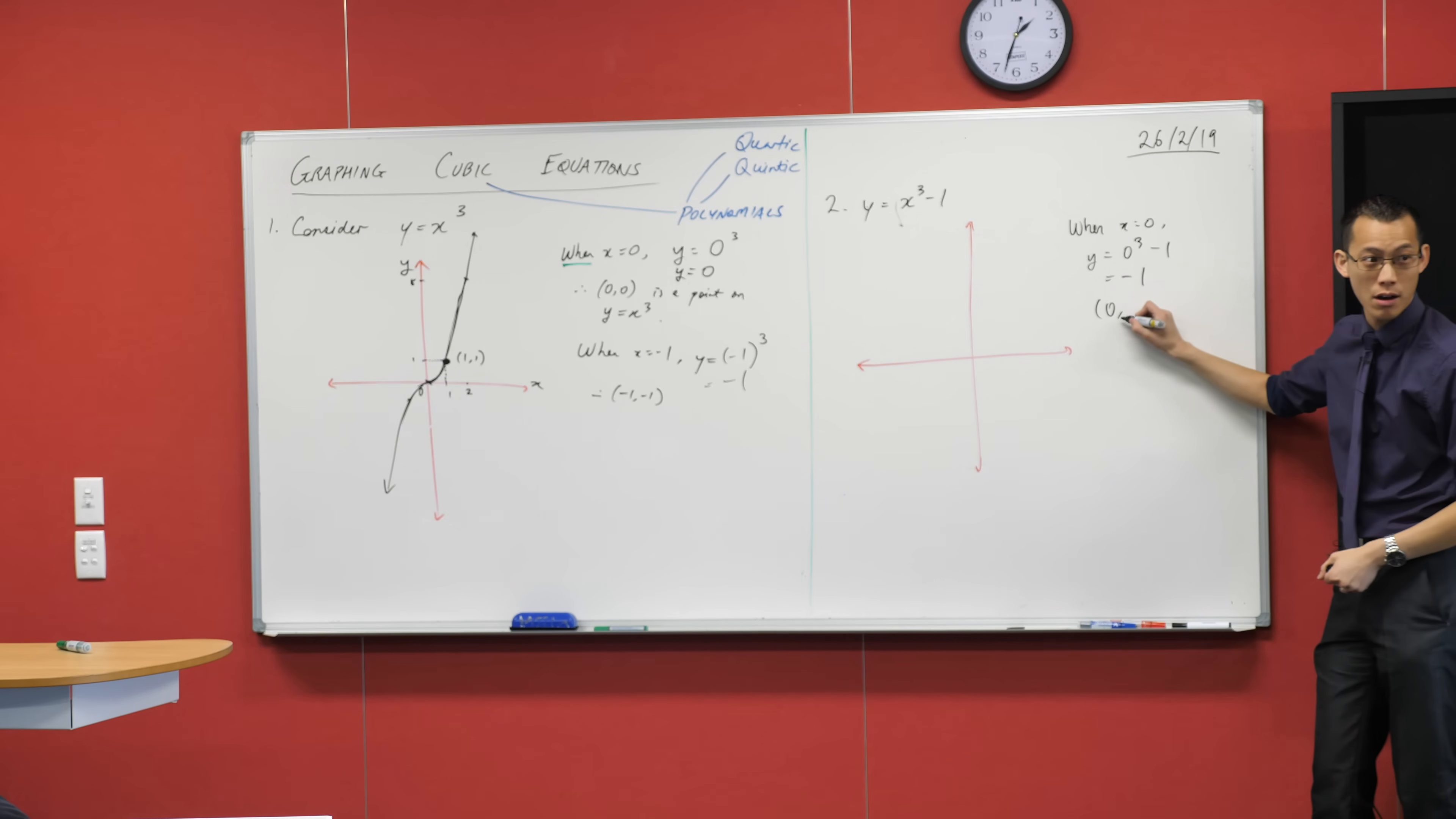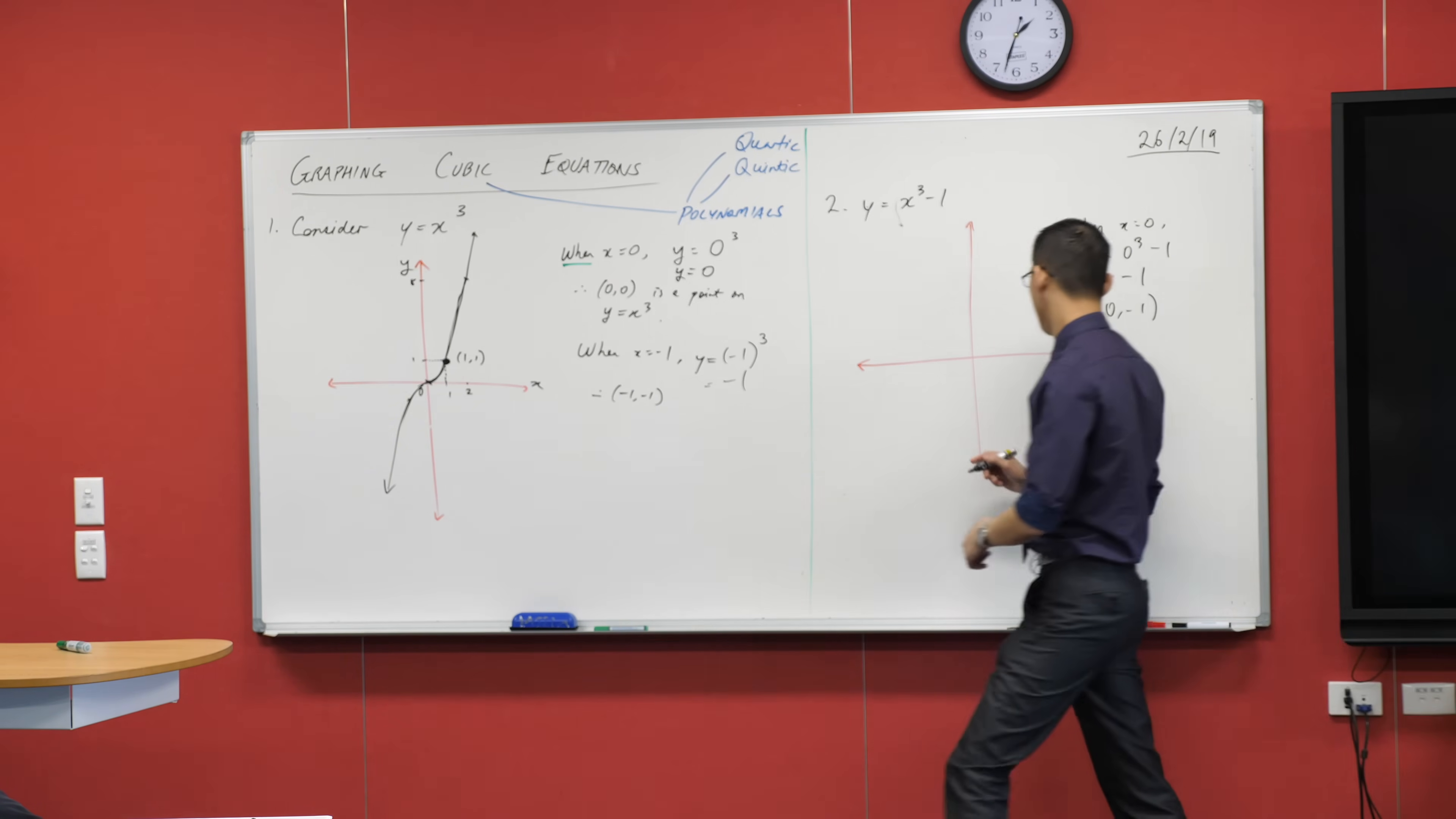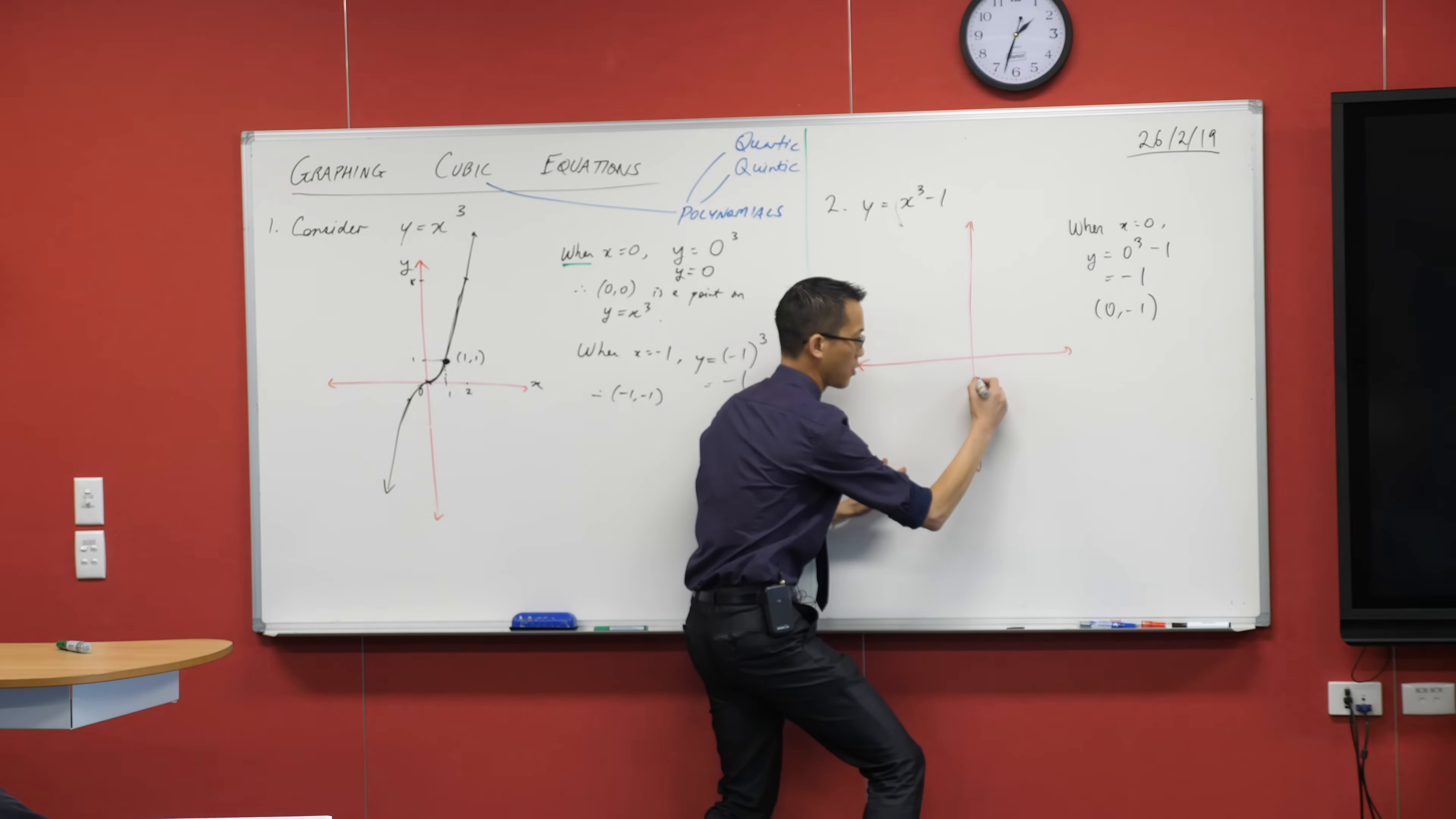What point am I going to put onto my graph as a consequence of this? 0, negative 1. Right? So I'm doing this to myself so I remember where this goes on the graph. This is a y-intercept, so I'm going to put that there.